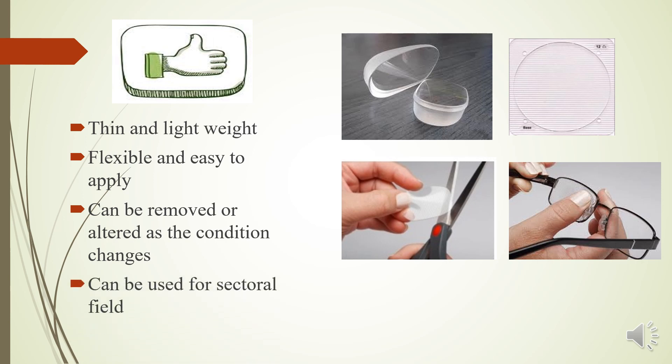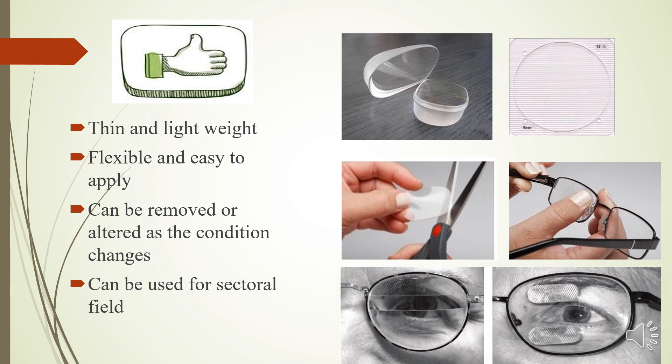Finally, it can be used for sectoral field. When we say complete prisms, that prism will act all over my gazes, but many conditions like particular gaze palsies or hemianopia, in those conditions we want the prism to act only in one particular set of areas. Like for example in hemianopia, I only wanted it to act on the half side of my right. For that reason, Fresnel prisms are very much usable.